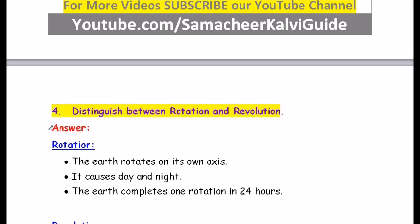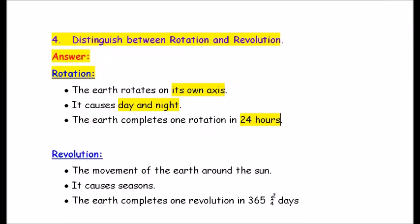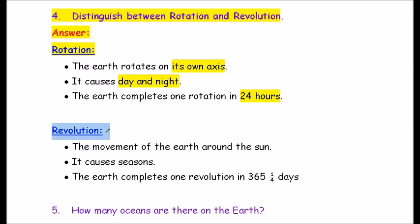Question number 4: Distinguish between rotation and revolution. Rotation: The Earth rotates on its axis; it causes day and night; the Earth completes one rotation in 24 hours. Revolution: The movement of Earth around the Sun; it causes seasons; the Earth completes one revolution in 365 and 1/4 days.